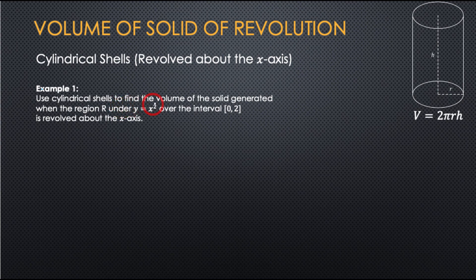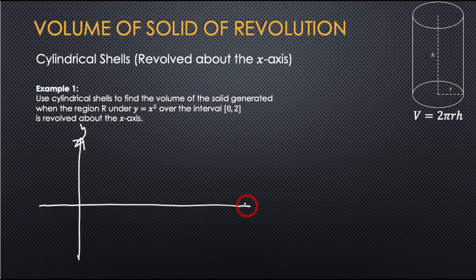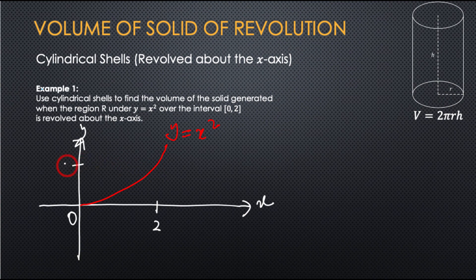Use cylindrical shell to find the volume of the solid generated when the region R under y equal to x-squared over the interval [0, 2] is revolved about the x-axis. We have the y-axis, the x-axis, and then y equal to x-squared, with x from 0 to 2. When x equals 2, y equals 4.